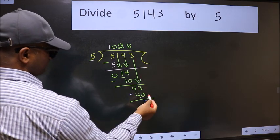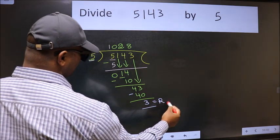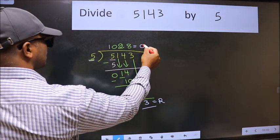No more numbers to bring down, so we stop here. This is our remainder and this is our quotient.